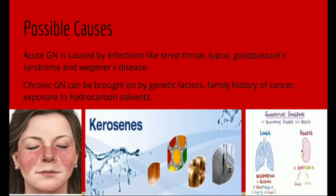Possible causes of GN — there are two kinds. Acute GN is caused by infections like strep throat, lupus, or Goodpasture syndrome, which is an autoimmune disorder in which your antigens attack your kidneys and your lungs. Also, Wegener's disease, which is inflammation of blood vessels. Chronic GN can be brought on by genetic factors, a family history of cancer, or exposure to hydrocarbon solvents — such as ethanol, gasoline, and kerosene.